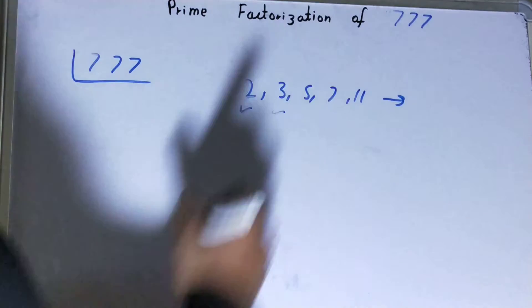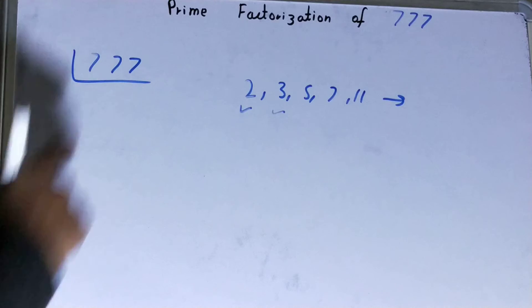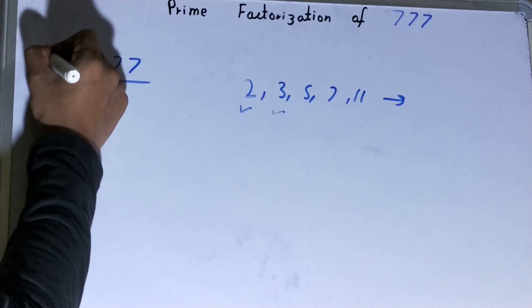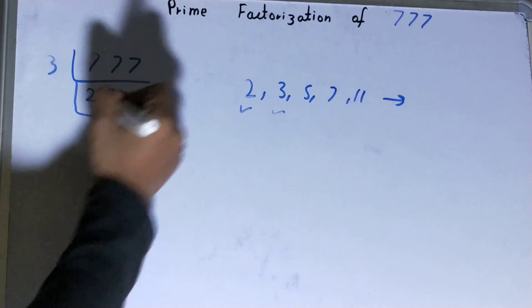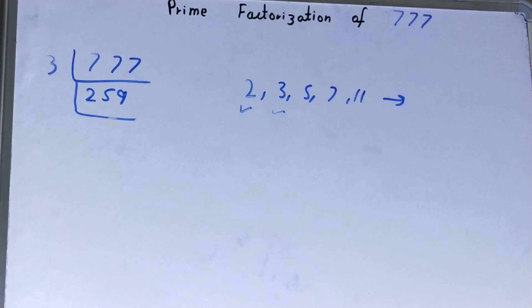So we'll go to the next prime number, which is 3. Is this divisible by 3? If you check, it is divisible, so we'll divide it and it goes in 259 times.